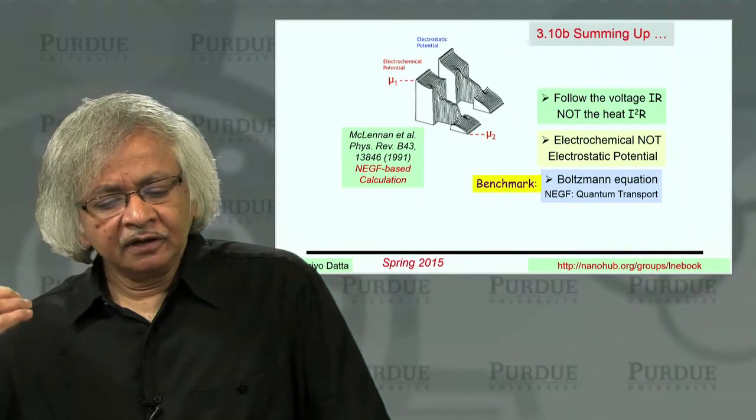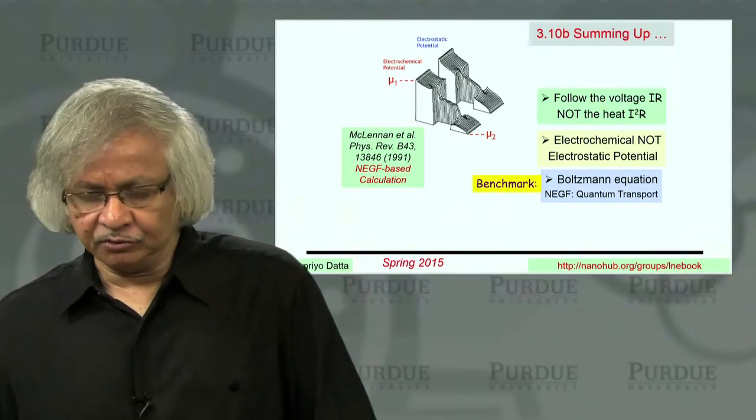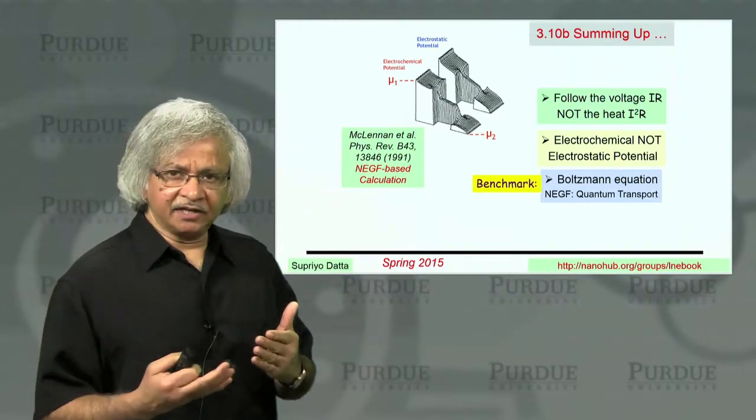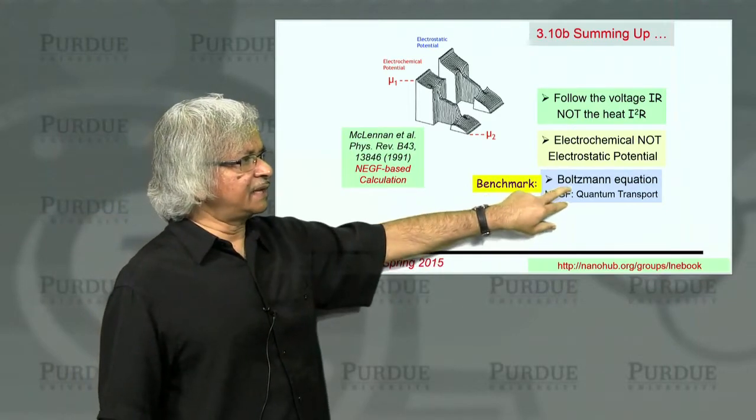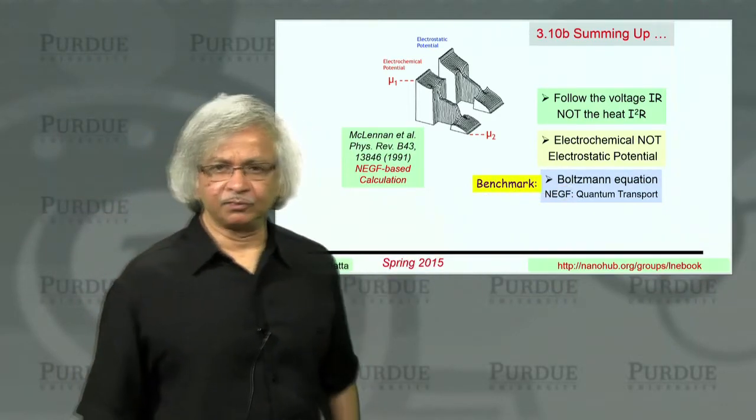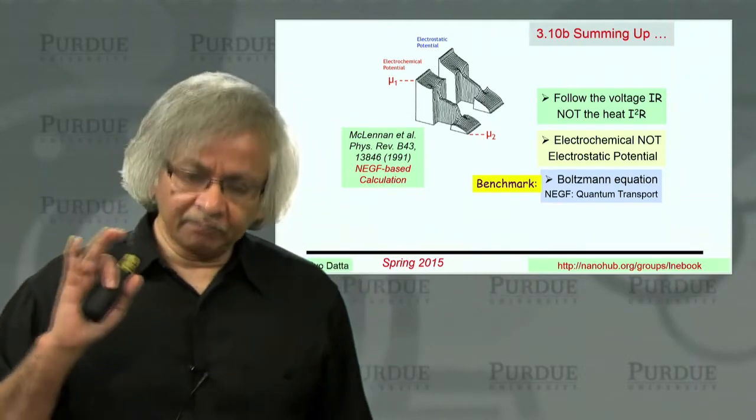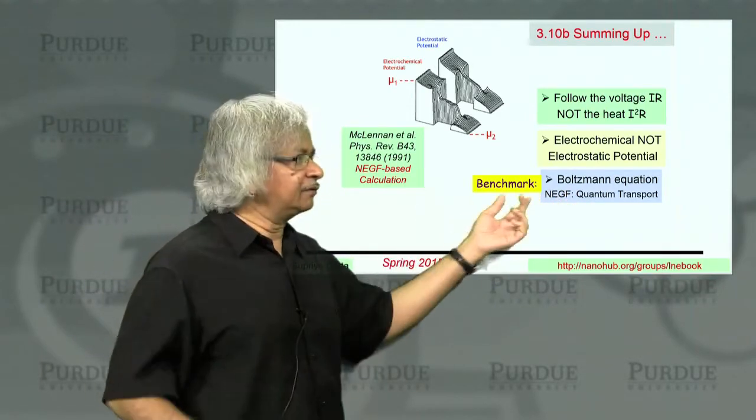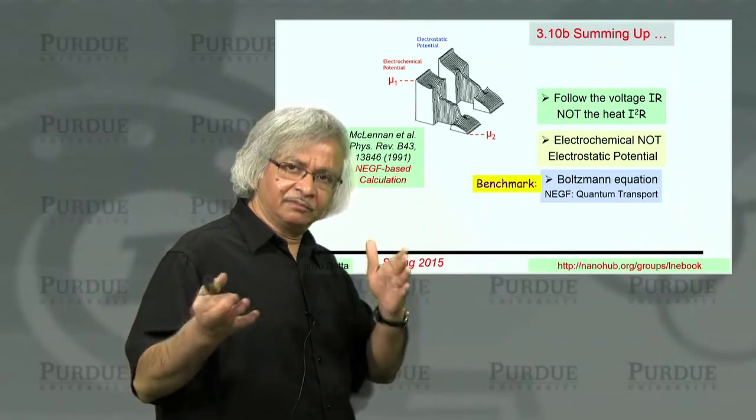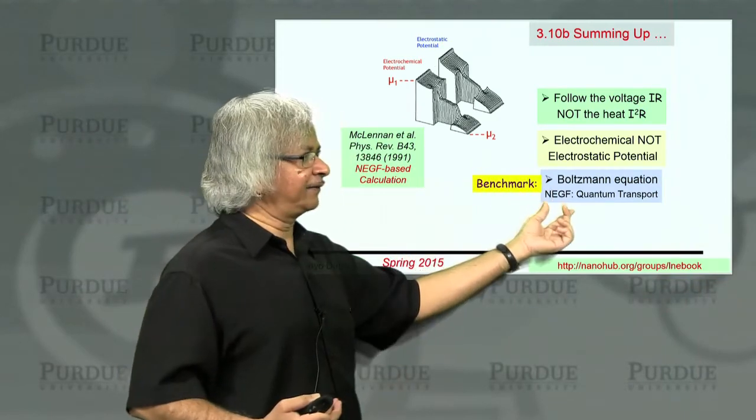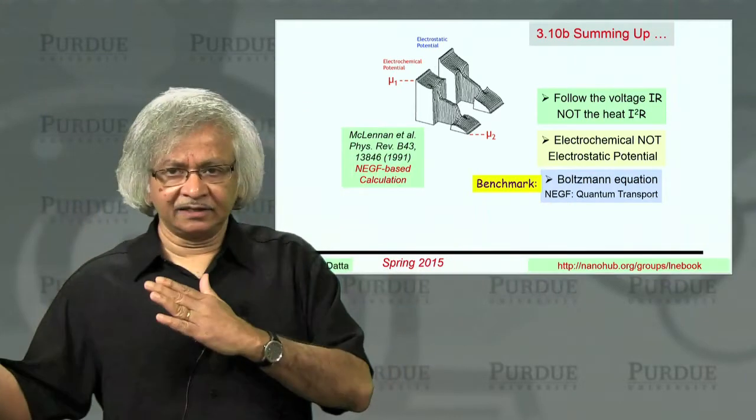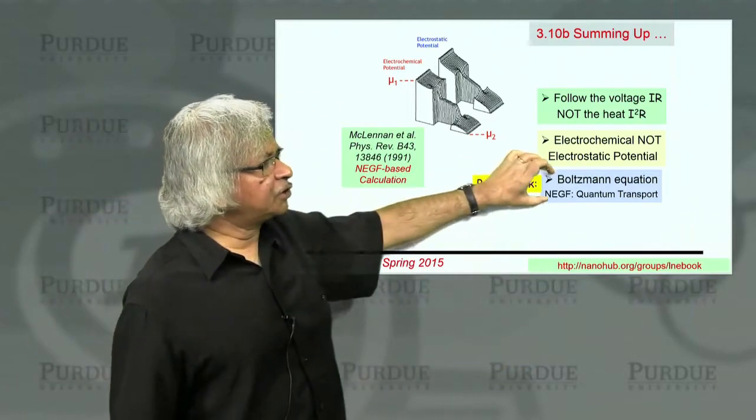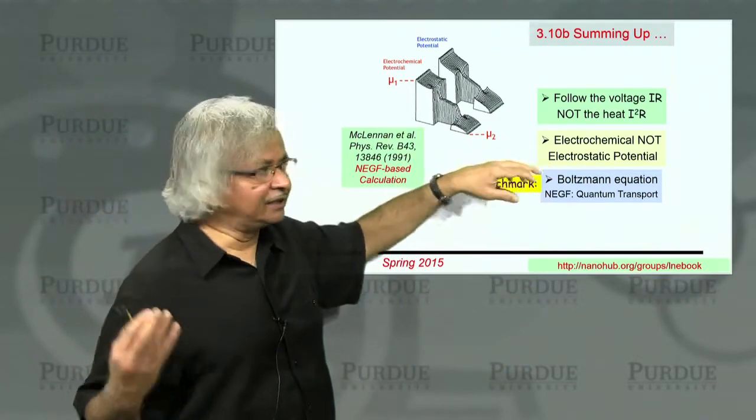Now in terms of the actual quantitative models that we use, if you wanted to actually model how these potentials vary inside the device, what you would use is something like the Boltzmann equation for semi-classical transport, which is what this part of the course is about. Or if you were doing quantum transport, you'd use the equivalent, which is this non-equilibrium green function, which includes the quantum mechanics. And that's like the second course that comes after this, where we go into the quantum models. So these are what you might use to actually get quantitative results.